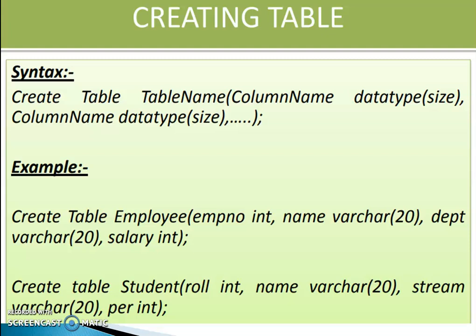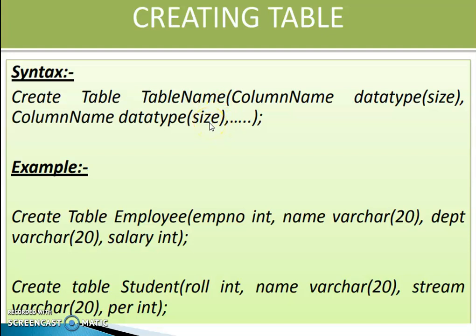How to create a table? The syntax is: CREATE TABLE table_name, then opening parenthesis. Inside that, we have to specify the column names — column name, space, data type, then we have to specify the size of that particular data type, separated by comma, then again column name, data type, size, comma, etc. After that, we close the parenthesis and put a semicolon.